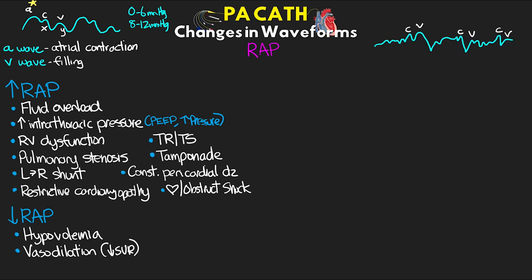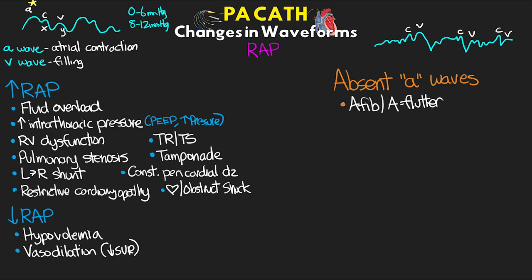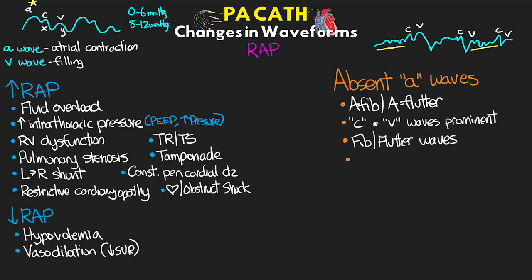In this next example, we're looking at absent A-waves. This is something we can see with A-fib, and to some degree with flutter. Here we have our C and V waves that are the most prominent, and then we're going to see those fib or flutter waves, potentially with beat-to-beat changes in the morphology of how this waveform looks.